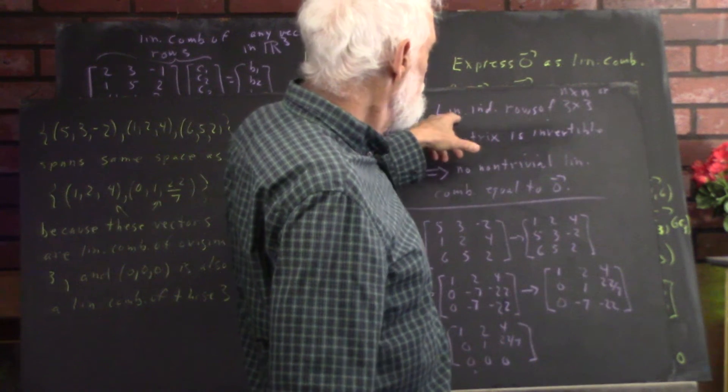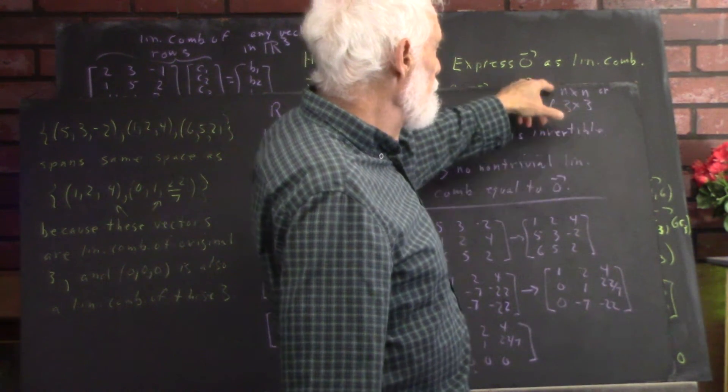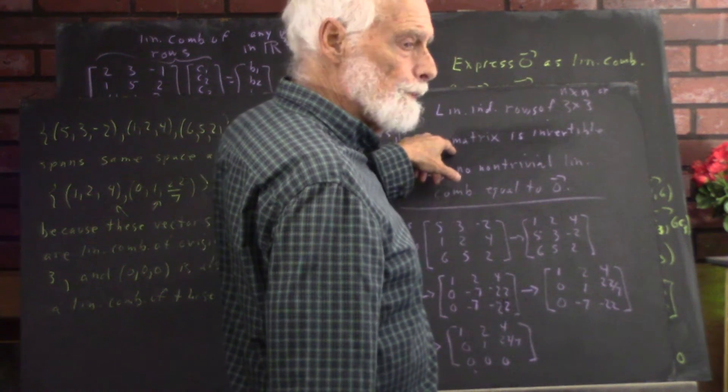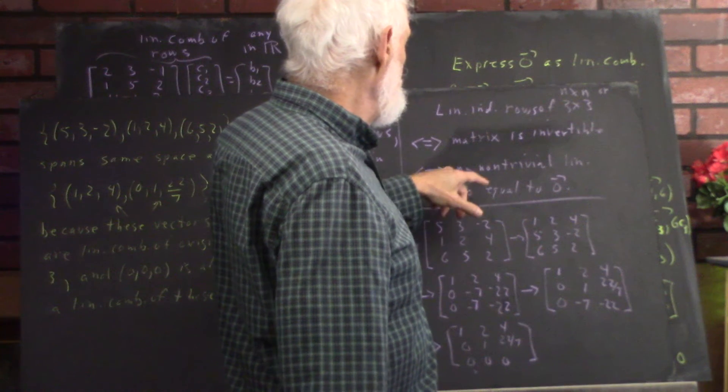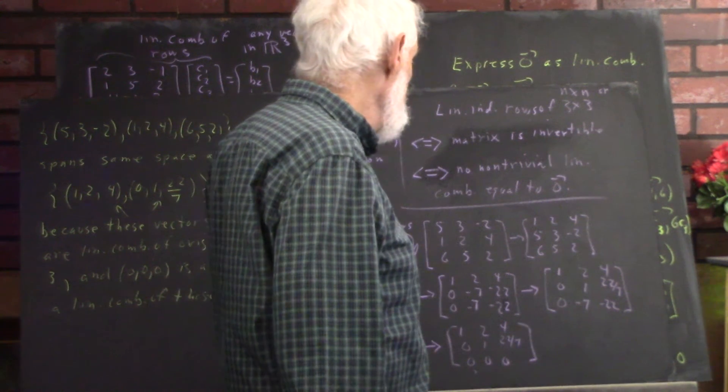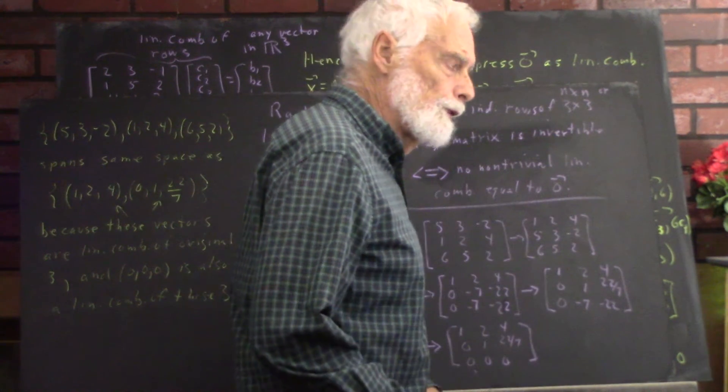So, if you have linear independent rows in a 3 by 3 or n by n matrix, it means the matrix is invertible. And vice versa, if the matrix is invertible, you have linearly independent rows. And you have no non-trivial linear combination equal to the zero vector.